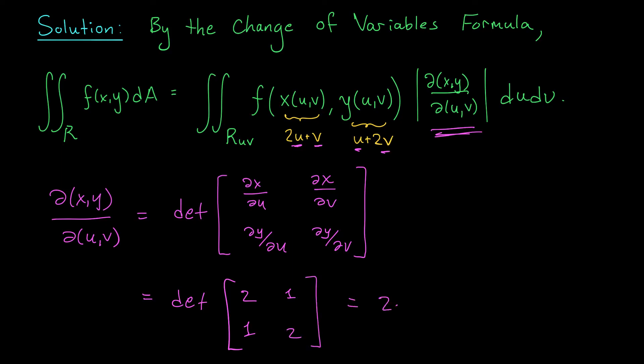My determinant is then 2 times 2 minus 1 times 1. I have a Jacobian of 3. As a reminder we're interested in the absolute value of our Jacobian. Ours is already positive though so no further work is required.